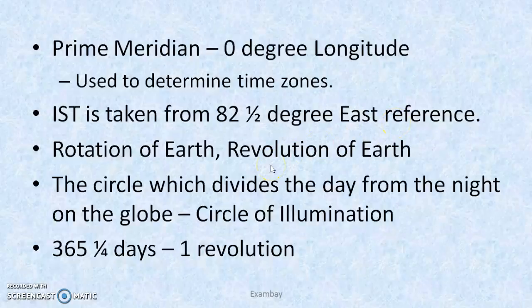The torrid zone lies from the equator to the Tropic of Capricorn and equator to the Tropic of Cancer — this region receives maximum heat as the sun's rays fall most directly here. The temperate zone is from the Tropic of Cancer to the Arctic Circle, and from the Tropic of Capricorn to the Antarctic Circle. The frigid zone is from the Arctic Circle to the North Pole, and from the Antarctic Circle to the South Pole. To find the location of any place, we use its coordinates — latitude and longitude in degrees — through GPS and various devices.